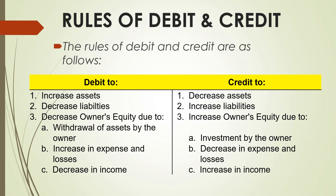The rules of debit and credit are as follows. You are going to debit if: 1) you increase assets, 2) you decrease liabilities, and 3) there is a decrease in owner's equity due to: A) withdrawal of assets by the owner, B) increase in expenses and losses, and C) decrease in income. On the other hand, you are going to credit if: 1) there is a decrease in assets, 2) an increase in liabilities, and 3) an increase in owner's equity due to: A) investment by the owner, B) decrease in expenses and losses, and C) increase in income.